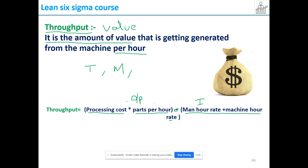For example, let us see. Processing cost that the customer is paying per part is 2 rupees, and per hour the machine is giving me 10 parts.